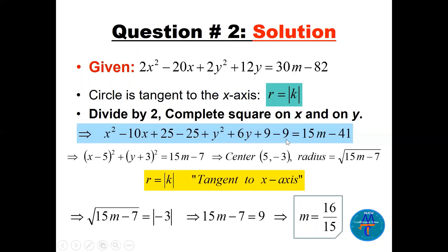For the y terms: divide the y-coefficient 6 by 2 to get 3, square it to get 9, and add 9 to both sides. After simplifying, the circle becomes (x − 5)² + (y + 3)² = 15 + m/2 − 25 − 9. There's a minus 25 and minus 9, taking them to the other side with minus 41 gives minus 7, so the right side simplifies.